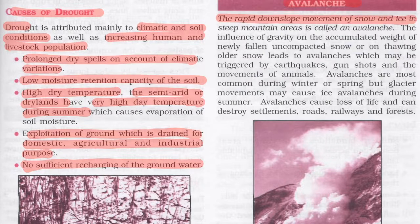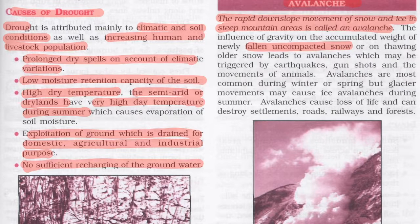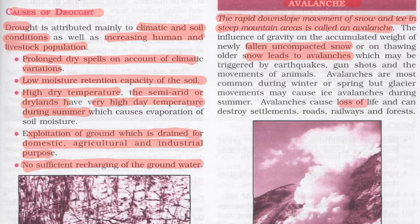An avalanche is the rapid downslope movement of snow and ice in steep mountain areas. The influence of gravity on the accumulated weight of fallen, uncompacted snow or older snow leads to avalanches. They may be triggered by earthquakes, gunshots, or the movement of animals. Avalanches cause loss of life and can destroy settlements, roads, railways, and forests.